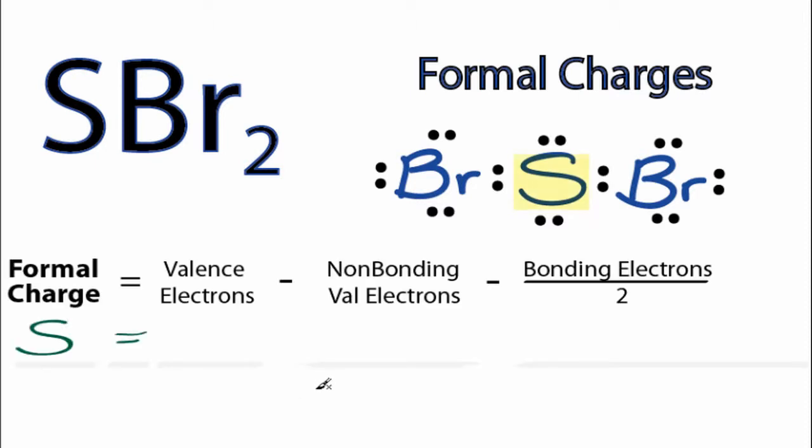Looking on the periodic table, sulfur is in group 6 or 16. It has 6 valence electrons. For non-bonding electrons, we have 4 non-bonding electrons for sulfur, and then we'll subtract the bonding electrons. We also have 4 bonding electrons, and we'll divide that by 2. 6 minus 4 minus 2 gives us 0, so the formal charge on sulfur is 0.